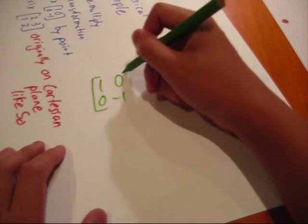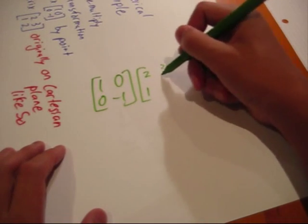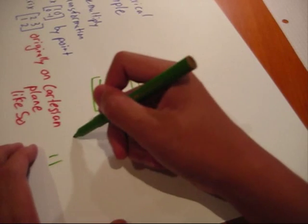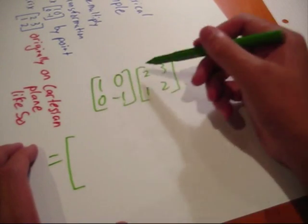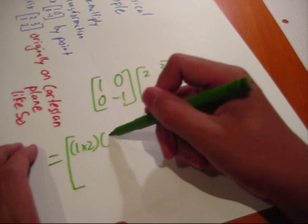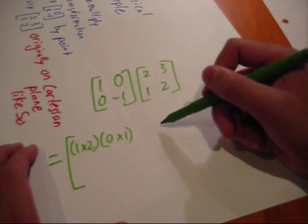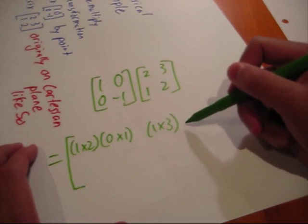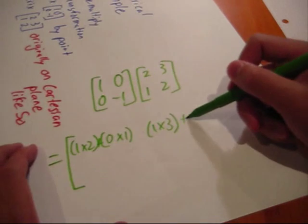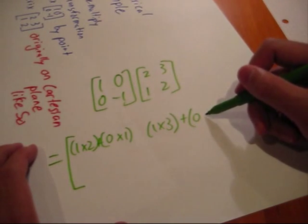Now, when we multiply it like so, we shall get the reflection on the x-axis. So it would be 1 times 2 plus 0 times 1, 1 times 3 plus 0 times 2.